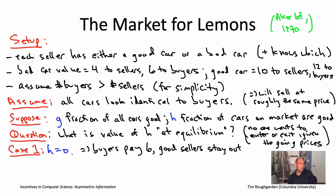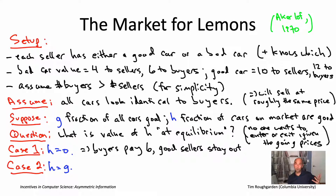You might hope there's also the other extreme equilibrium where everybody participates, and that this would be self-reinforcing as well. That corresponds to asking: is H equal to G also an equilibrium? Whether H equals G — all cars on the market — is self-reinforcing in the same way as H equals zero depends on the value of G.